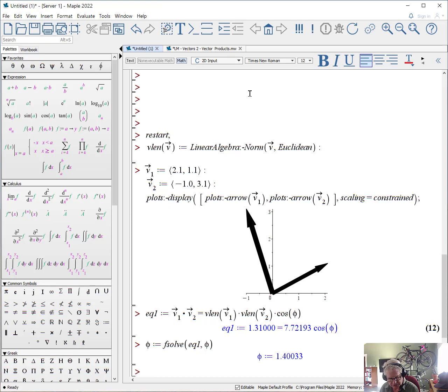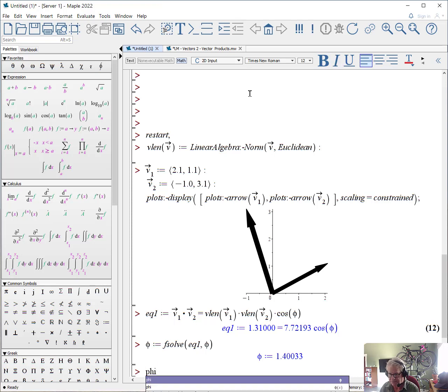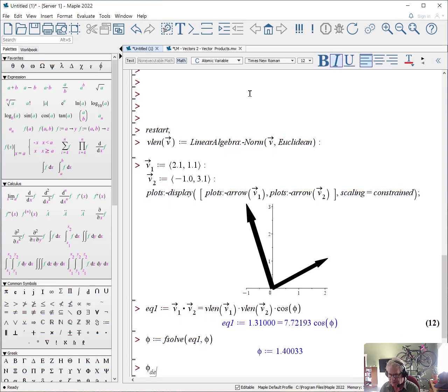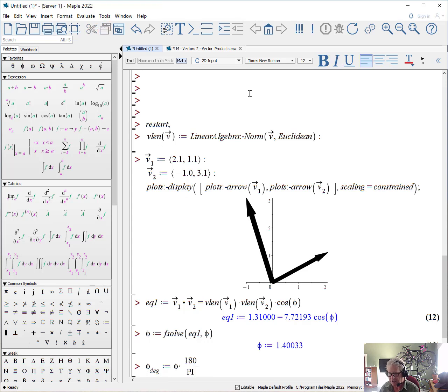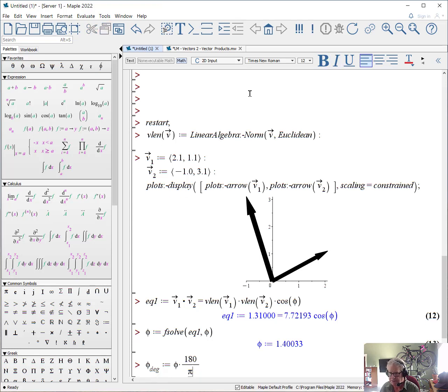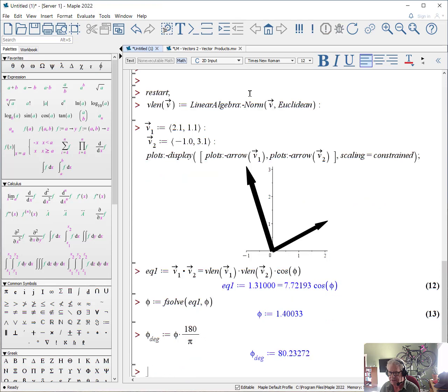Now, the problem, of course, is this is in radians. This is not in degrees. So we have to convert it to degrees. We can use a convert function or what I could do is I could just simply say phi in degrees is phi and there are 180 degrees in pi radians. And then when we hit enter, we get a value of 80 degrees.